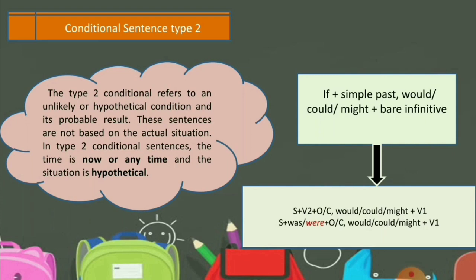Contohnya kamu bilang begini: 'Seandainya tadi saya bawa payung, pasti saya bisa pulang ke rumah dengan cepat.' Itu bisa terjadi nggak? Tidak bisa. Kenapa? Karena kamu tidak membawa payung dan situasinya sekarang hujan deras. Kamu hanya bisa berandai-andai, 'Seandainya tadi aku bawa payung, pasti aku bisa pulang.' Pada kenyataannya, tidak tercapai — tidak bisa pulang ke rumah. Itulah konteksnya Conditional Sentence Type 2.